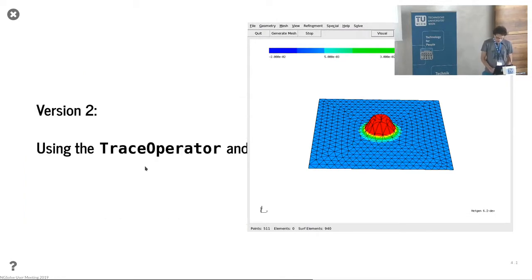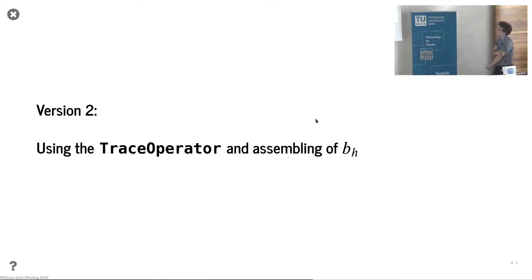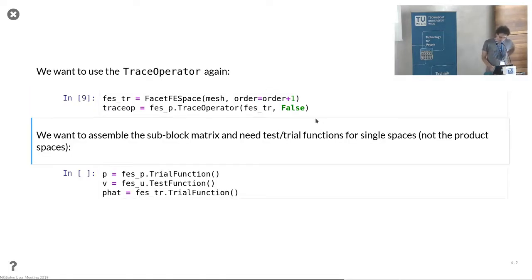Now we want to see if we can improve that. We want to use the trace operator and assembling of B. Since we have a linear problem, we could hope that assembling the sparse matrices and applying those is faster than applying the operators only.